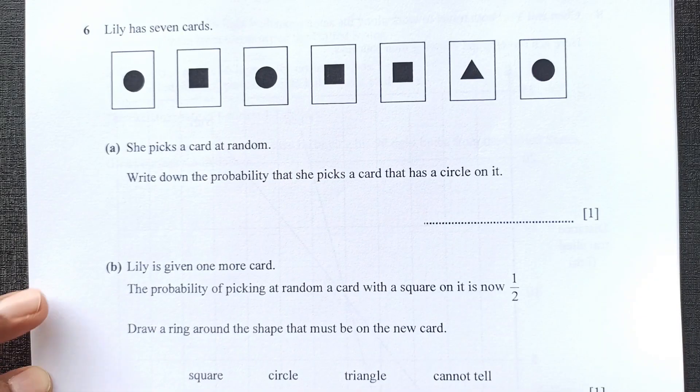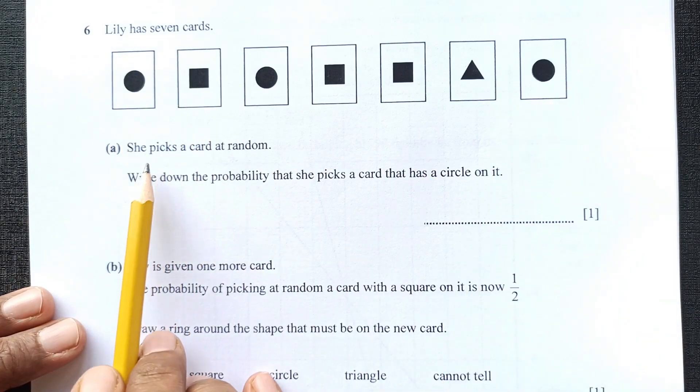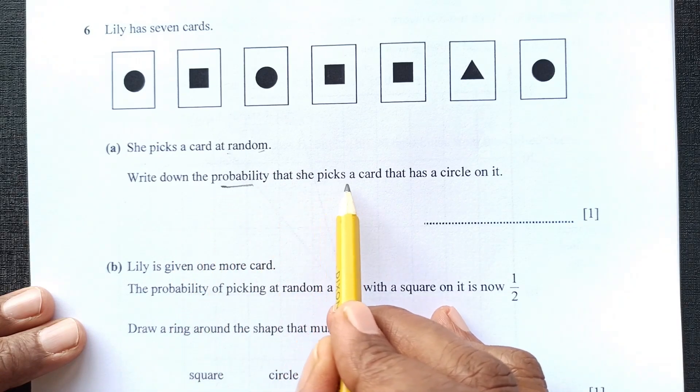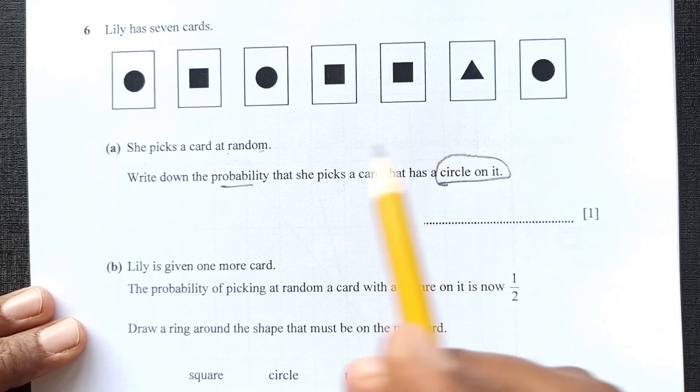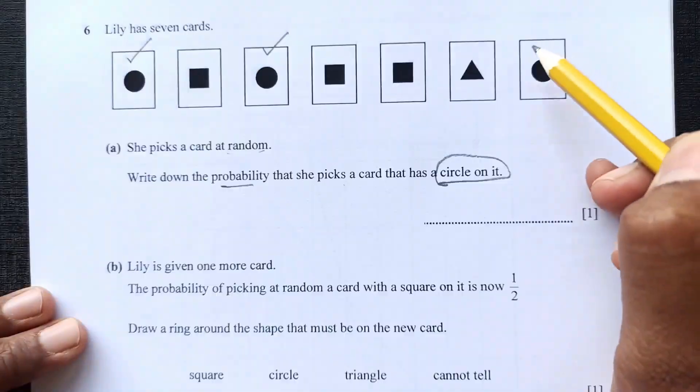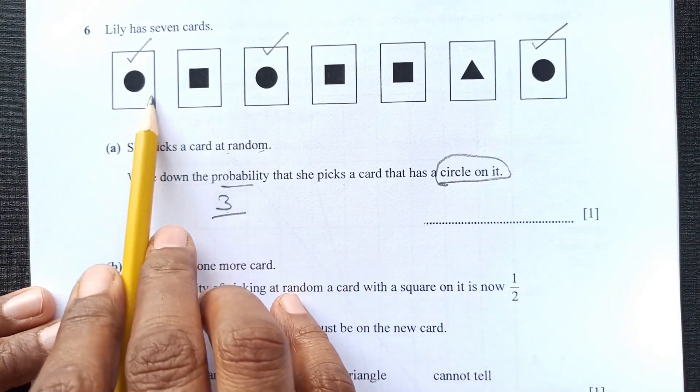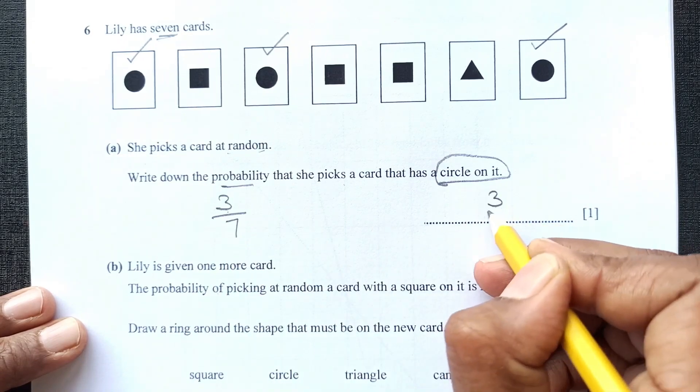Question 6 part A. Lily has 7 cards. You can see these cards. She picks a card at random. Write down the probability that she picks a card that has circle on it. We are looking for the circles. How many circles we have? 1, 2 and 3. We have 3 circles. Out of how many total outcomes are they? 7 cards. So 3 over 7. Very simple question.